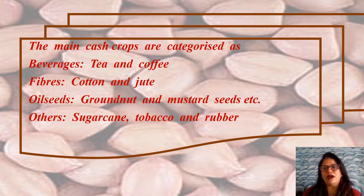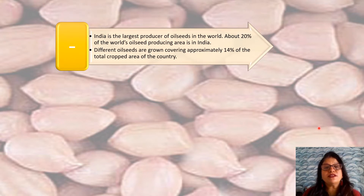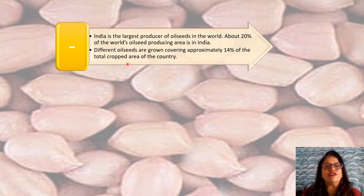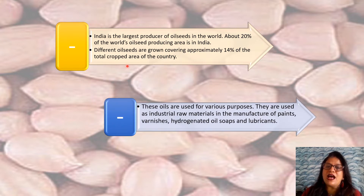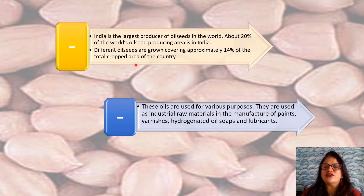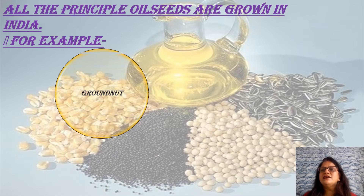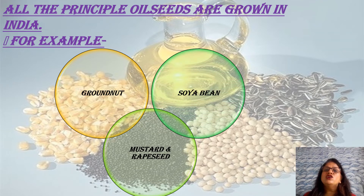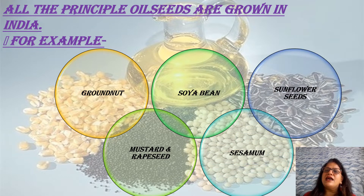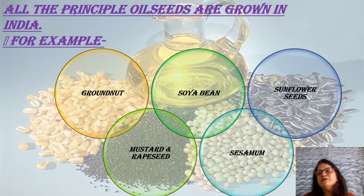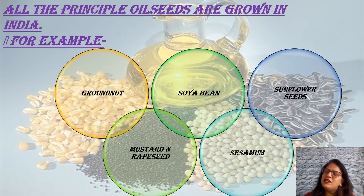In this module we are going to learn about oil seeds. India is the largest producer of oil seeds in the world, covering approximately 14 percent of the total cropped area. These oil seeds are used for various purposes: as industrial raw material in the manufacture of paints, varnishes, hydrogenated oils, soaps, and lubricants. Main oil seeds produced in India include groundnut, mustard, coconut, sesame, soybean, castor seeds, linseed, and sunflower. Most are edible and used as cooking mediums.